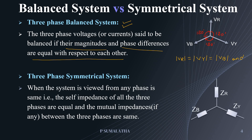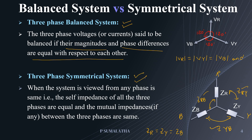For example, consider a circuit: if you look from any phase — R, Y, or B — all the self-impedances should be equal, that is Zr = Zy = Zb. Not only this, if you have any mutual impedances — Zrb, Zry, and Zyb — those mutual impedances should also be equal to each other. This kind of system is called a three-phase symmetrical system.